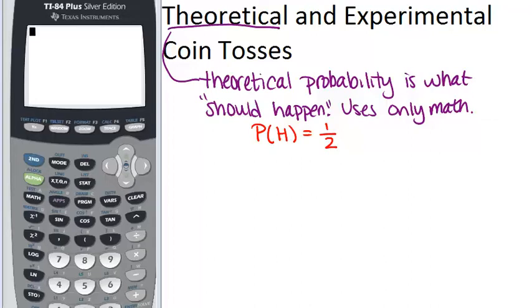Now, experimental probability is something different. It relies on actually doing an experiment, so tossing a coin multiple times and seeing what happens. So you need data in order to figure out an experimental probability.